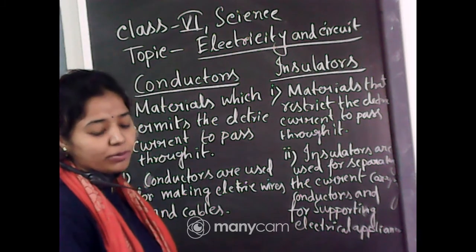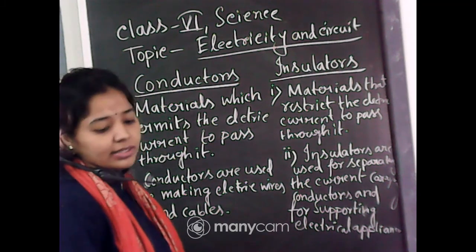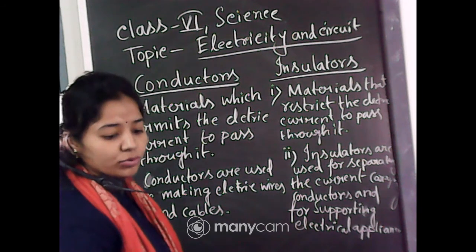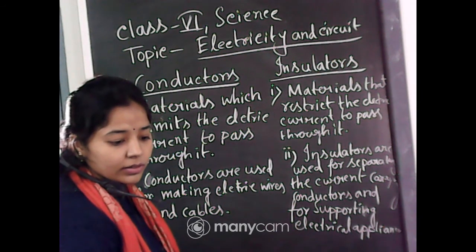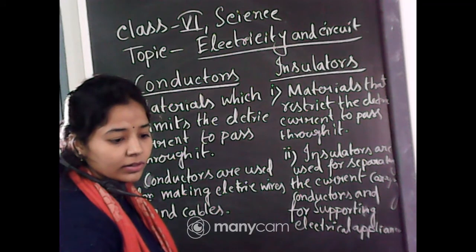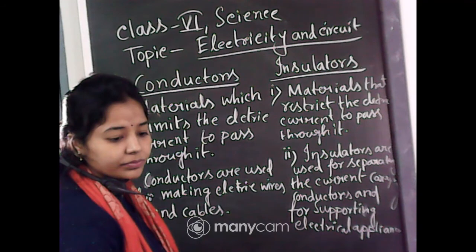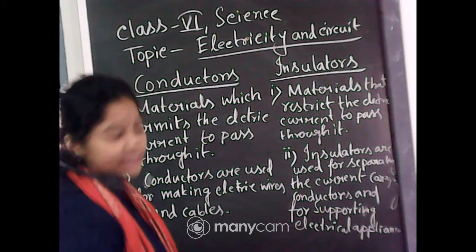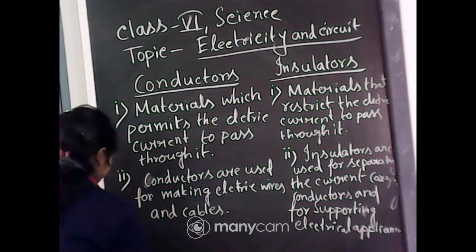Any problem up to this portion, students? That was the second point of difference. Insulator is used for separating the current-carrying conductors and for supporting electrical appliances. Let's come to another difference — by example.